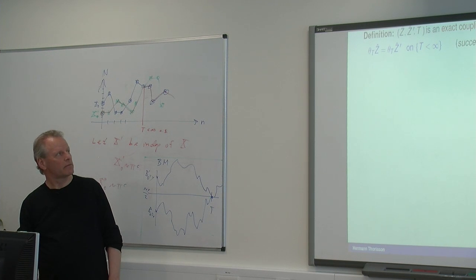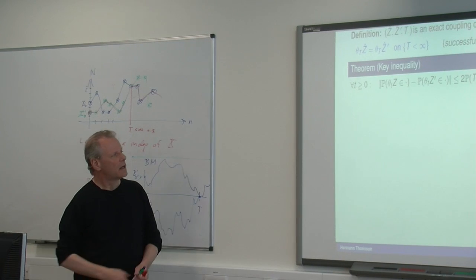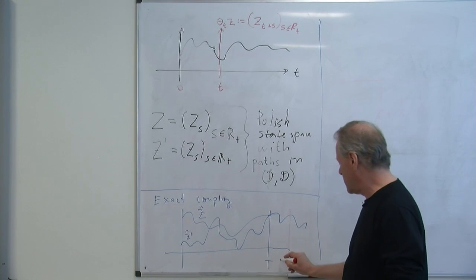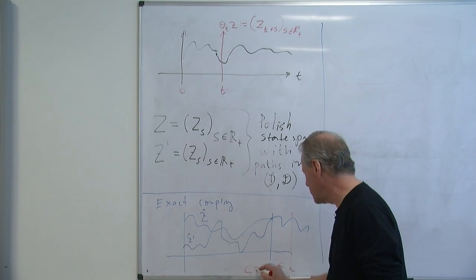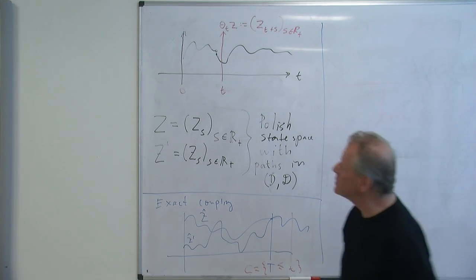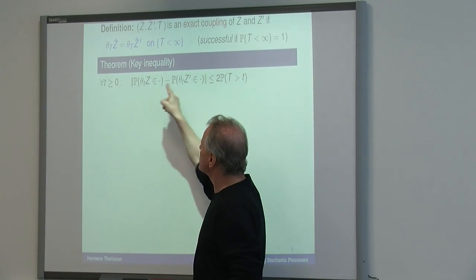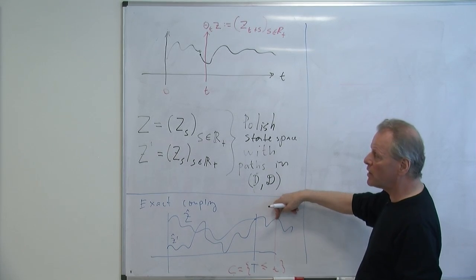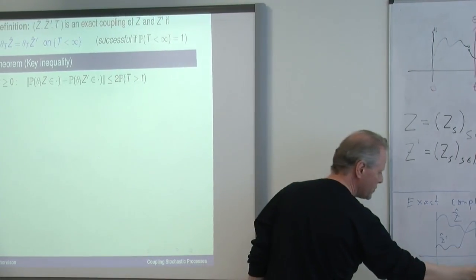There is a key inequality. If you shift to T and look at the process from there onwards — the whole thing, not only the value at time T — then the distributions in total variation will be less than twice the tail of T. Why is that? Take a T here. This event C — that's the reason I introduced the coupling event — is a coupling event for those two guys. The hatted processes are identical from there on. So the total variation is less than or equal to twice the complement of this.